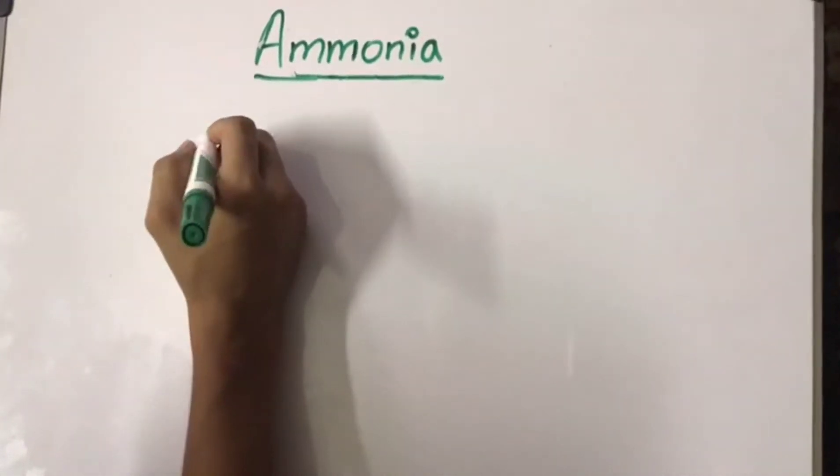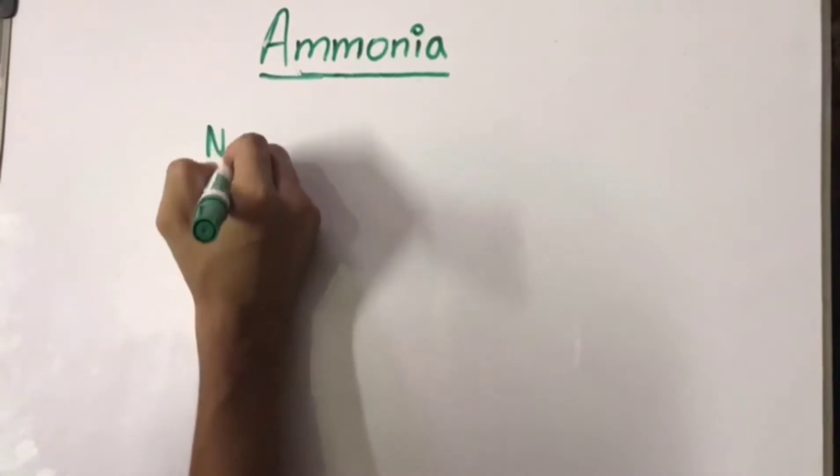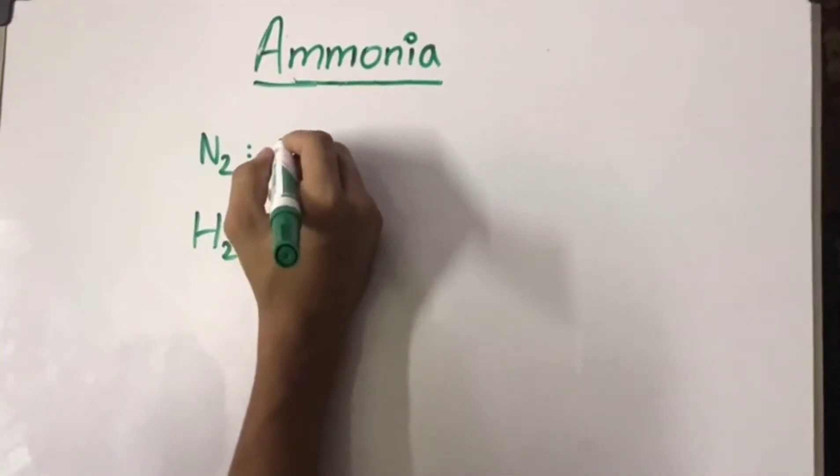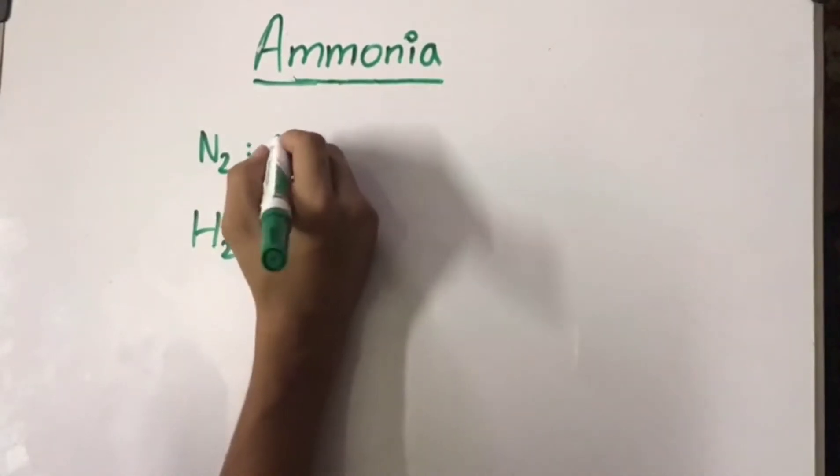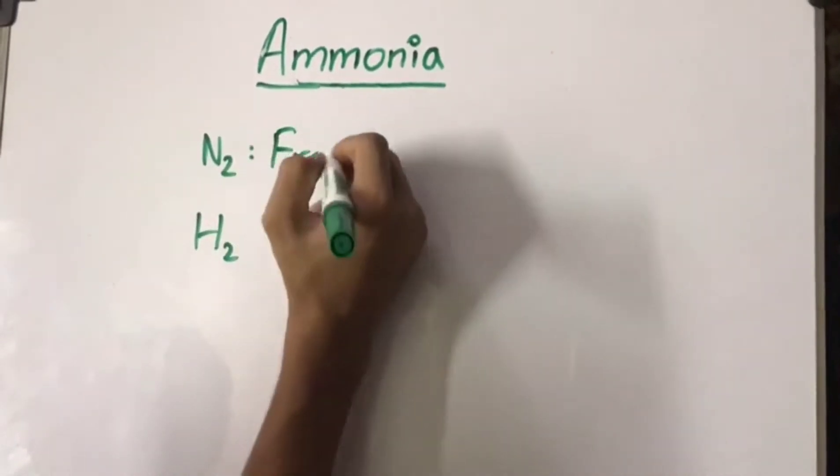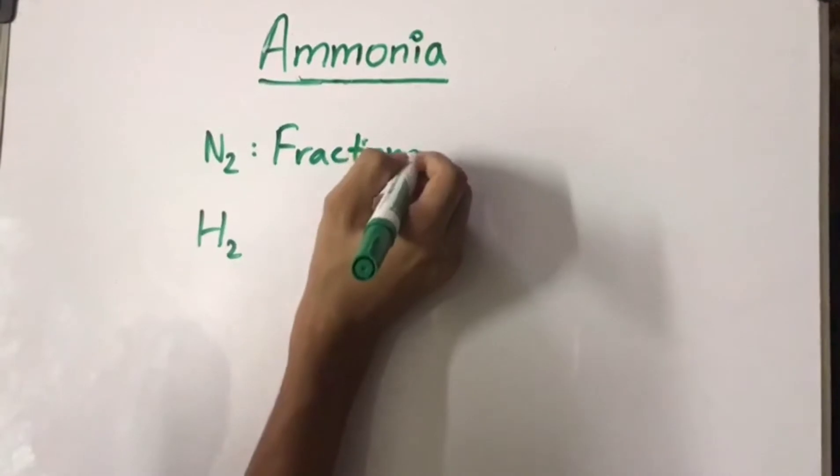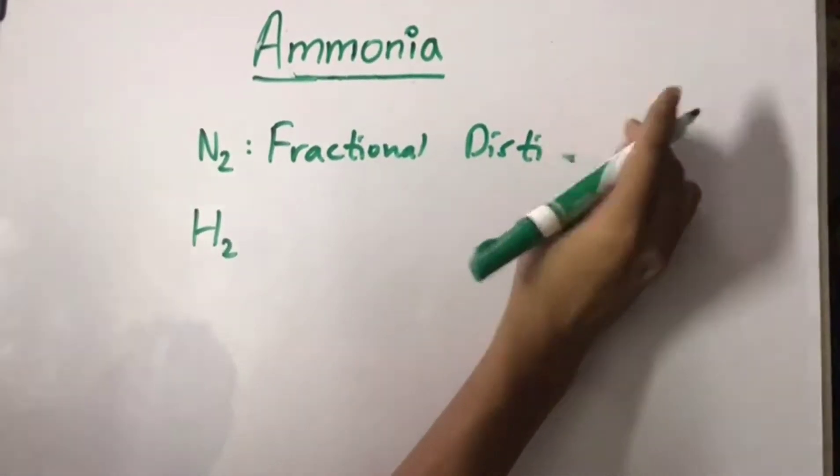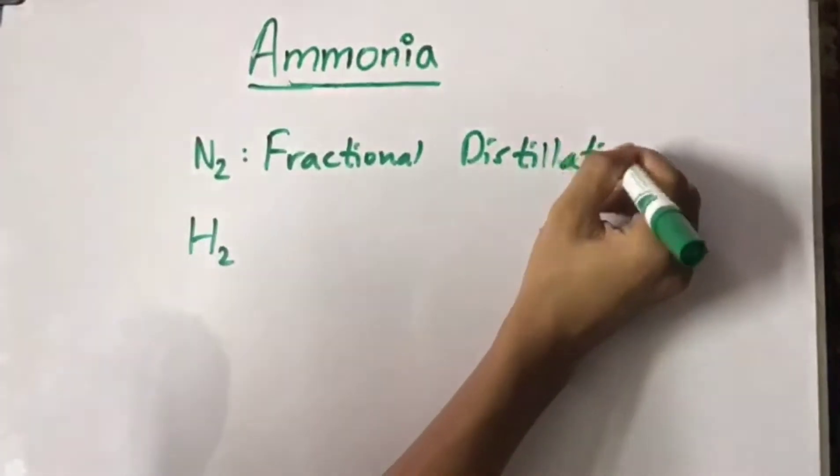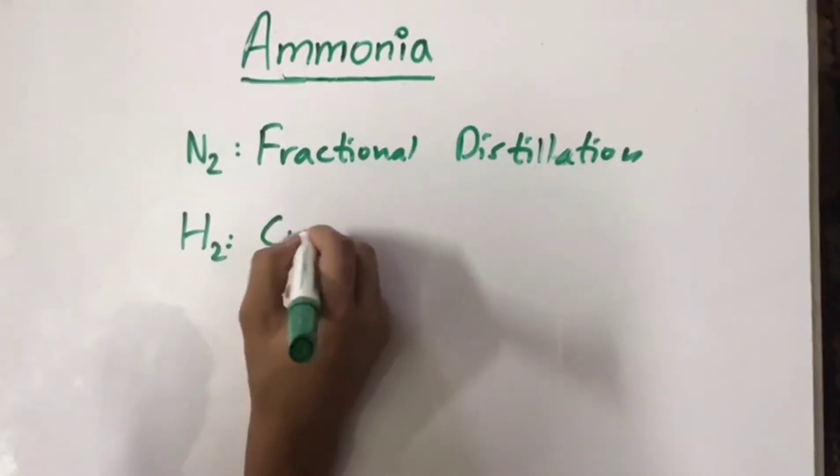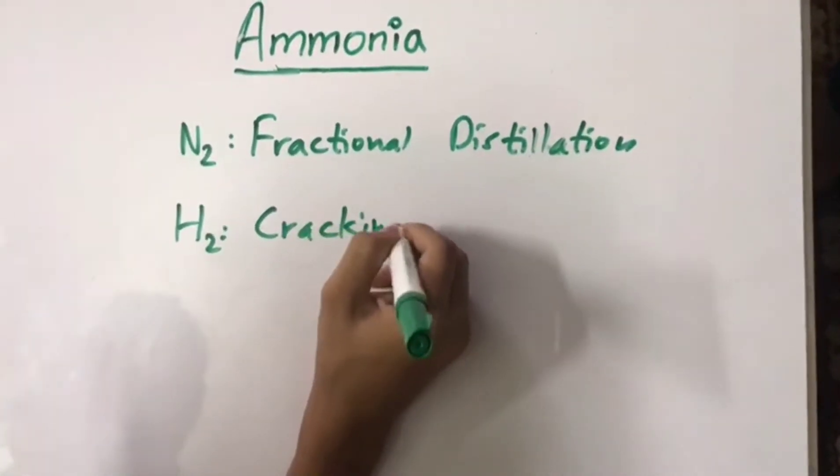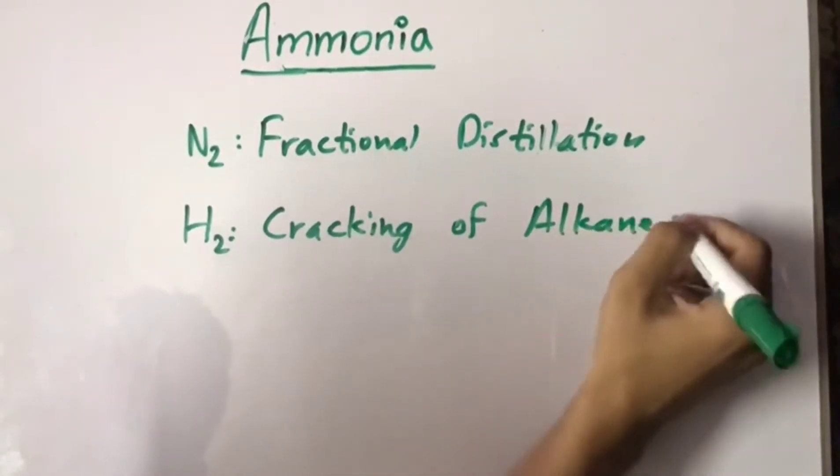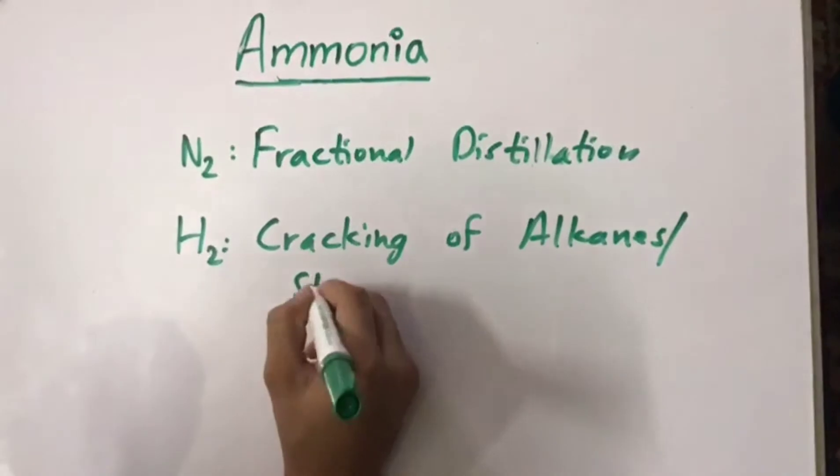Ammonia is produced by the Haber process. The raw materials in the Haber process are nitrogen and hydrogen. Nitrogen is extracted by the fractional distillation of liquefied air, and hydrogen can be obtained by either the cracking of alkanes or the steam methane process.